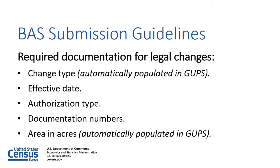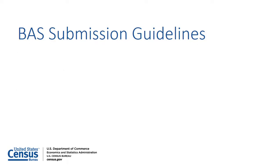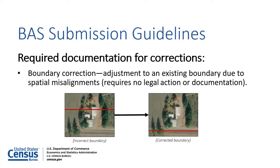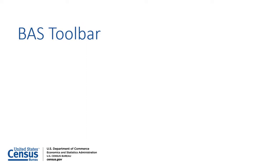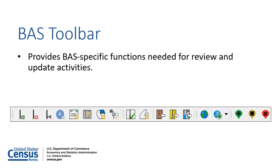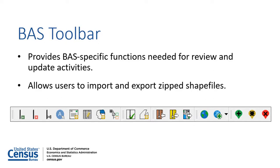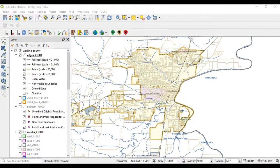The change type and the area fields are automatically populated when using GUPS to report a legal change. Boundary corrections are adjustments to inaccurate boundaries due to spatial misalignments; these types of changes do not require any legal action or documentation. To aid users in creating their BAS submission, GUPS provides a BAS toolbar containing BAS-specific functions for completing all review and update activities and exporting zipped shapefiles. To create a BAS submission, open the working county and make sure all desired layers are turned on. GUPS will automatically turn on the most relevant layers for the working county, such as roads and current places.